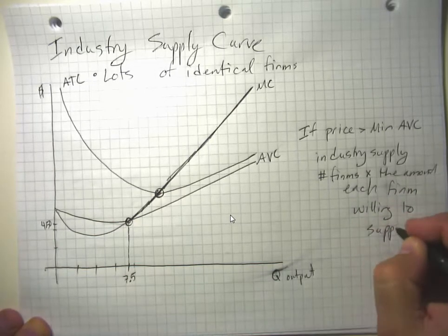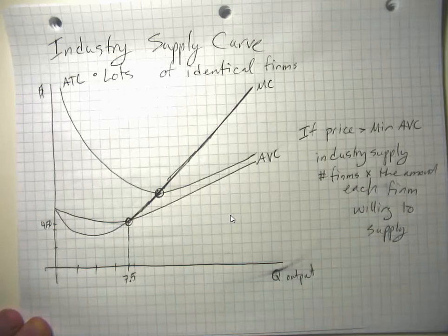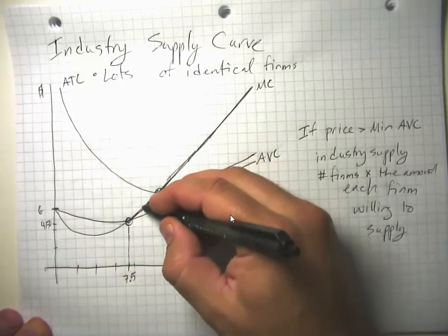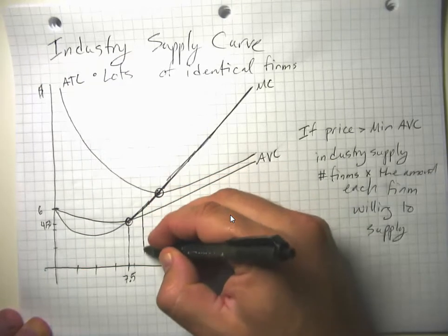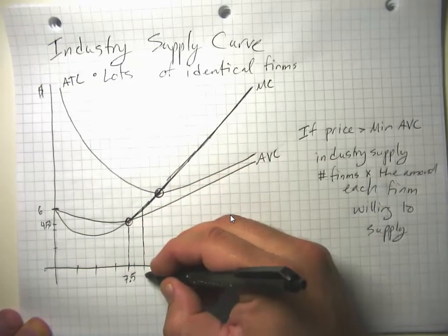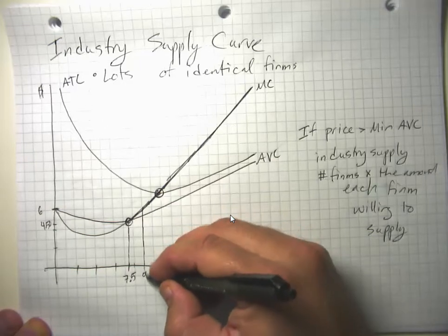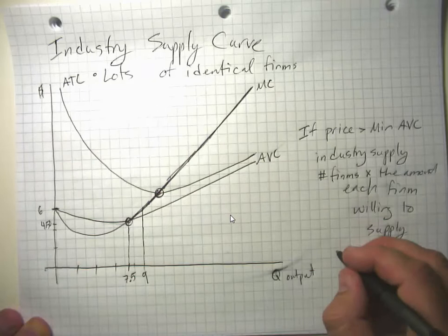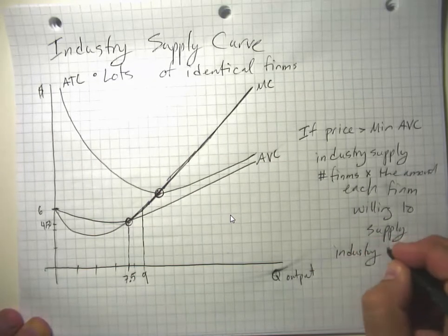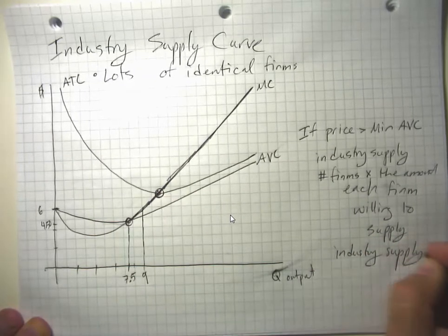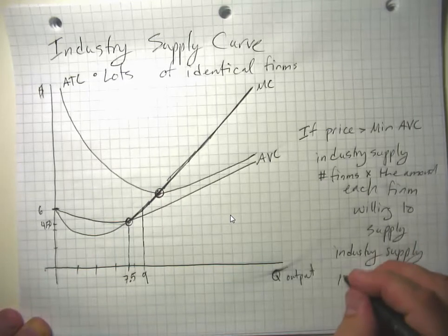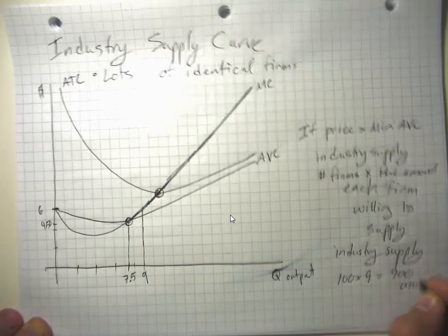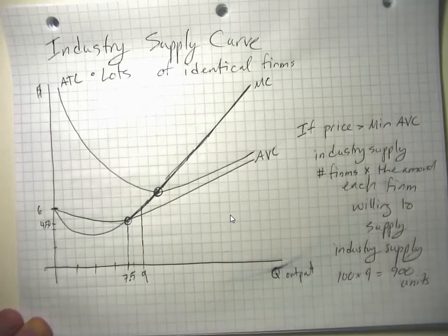So if we had 100 firms of this size and the price was $6, then each of our 100 firms would be willing to supply 9 units. And industry supply would be 100 firms times 9 units each, or 900 units. But that's what it would be in the short run.